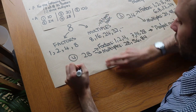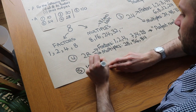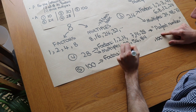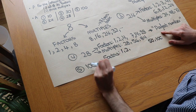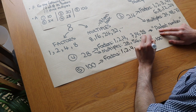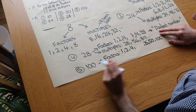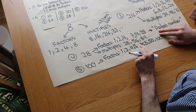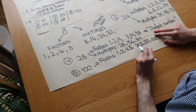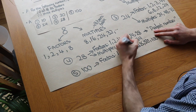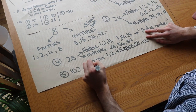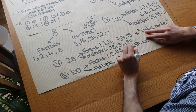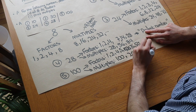Finally, let's find the factors and multiples of 100 using our trick. 1 times 100 gives 100. 2 goes into 100, giving the pair 2 and 50. 3 doesn't go in. 4 does — 4 times 25. 5 goes in 20 times. 6, 7, 8, and 9 don't go in. But 10 does, and 10 times 10 is 100, so we just have 10 once. For multiples: 1 times 100 is 100, 2 times 100 is 200, 3 times 100 is 300.